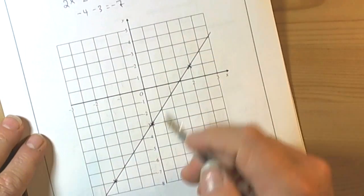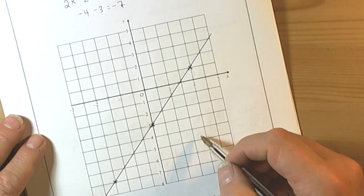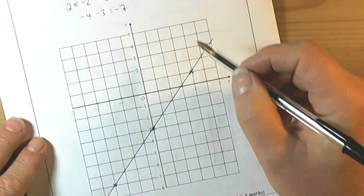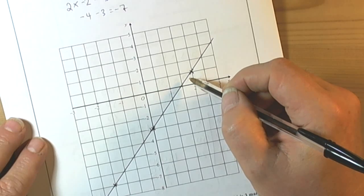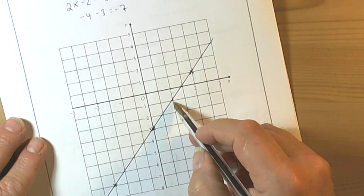And we could check, we've done 3 coordinates, we've got a straight line, but we should really check that it works for other things as well. So if we do x is 1, 2 times 1 is 2, take away 3 is negative 1. So 1, negative 1. So it looks like it's worked.